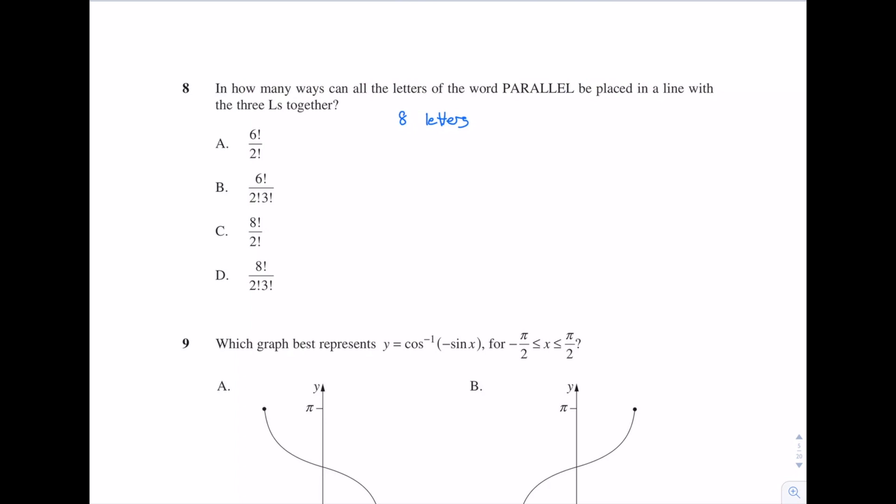So we have 6 total elements. So how many ways can we arrange those 6 elements? Well, we can arrange them in 6! ways. However, we have two A's. So A is a repeated element. So we can say here that we have 2 A's, which means that we have to divide by 2!, which means A is our answer here.